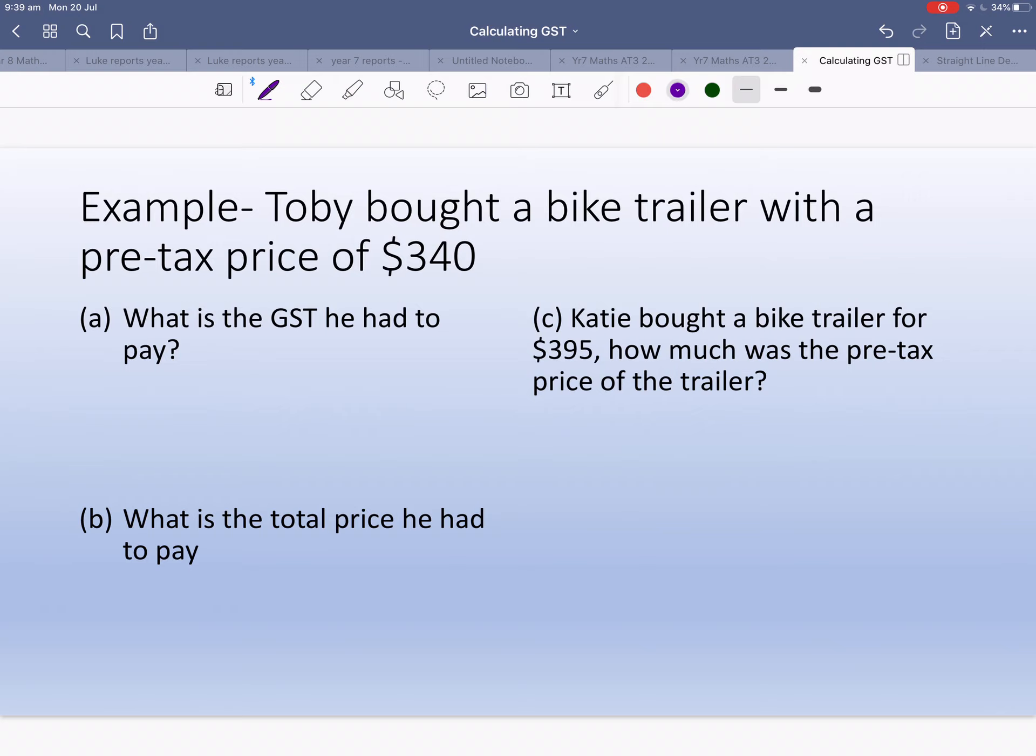Toby bought a bike trailer with a pre-tax price of $340. What is the GST that he had to pay? I'm going to write this in English: 10% of $340. Now I'm going to change it to maths: either 10% or 10 over 100. 'Of' means times, so 10% times 340. I'm going to put that in my calculator and I get $34.